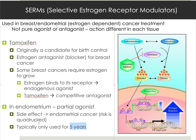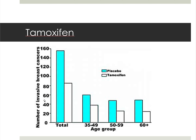Tamoxifen is still used because it works remarkably well. Data shows that tamoxifen reduced invasive breast cancers by approximately 50% compared to placebo across all women. When broken out by age, the effect becomes even more significant — the older the patient, the more effective tamoxifen is at preventing breast cancers. Used for less than five years, it is considered safe and very effective at preventing invasive metastatic breast cancers.